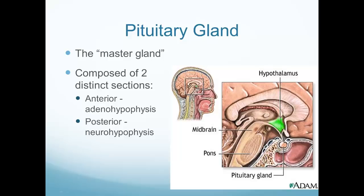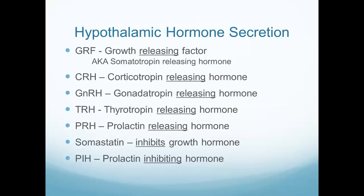The pituitary is often called the master gland because it reads what's happening in the body and helps control the functions of many organs through hormonal control. There are two distinct sections: anterior and posterior pituitary, and we associate different problems with each section. Let's look at some of the hormones secreted from the hypothalamus, which also helps control many of our hormonal secretions.